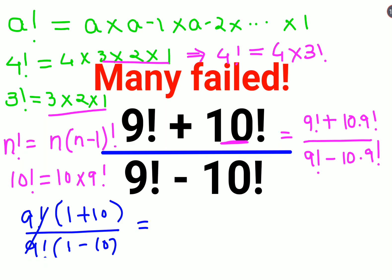So now if you look closely, these 9 factorial can get cancelled, and I am left with 11 upon 1 minus 10, that gets you minus 9. So that gets you basically minus 11 upon 9, which is an improper fraction.